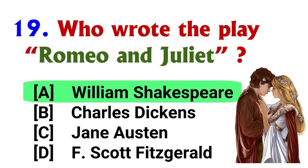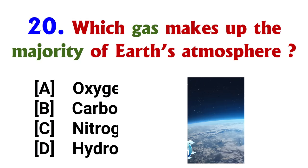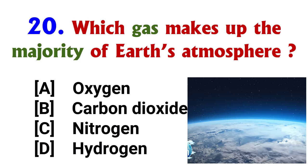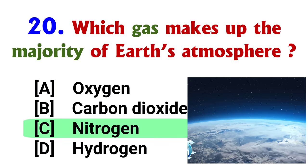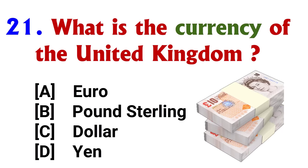Which gas do plants release during photosynthesis? Answer: option A, Oxygen. Who wrote the play Romeo and Juliet? Answer: option A, William Shakespeare.